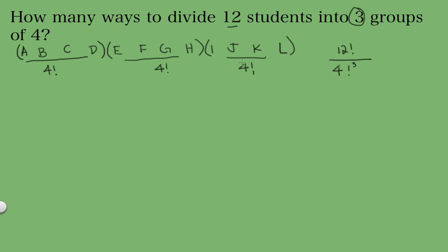We also have three groups — we could call them group one, group two, and group three. But having group two first, then group one, then group three is the same thing to us. It doesn't matter which order the groups appear. There are 3 factorial different ways to permute these three groups, so we need to divide by 3 factorial as well.